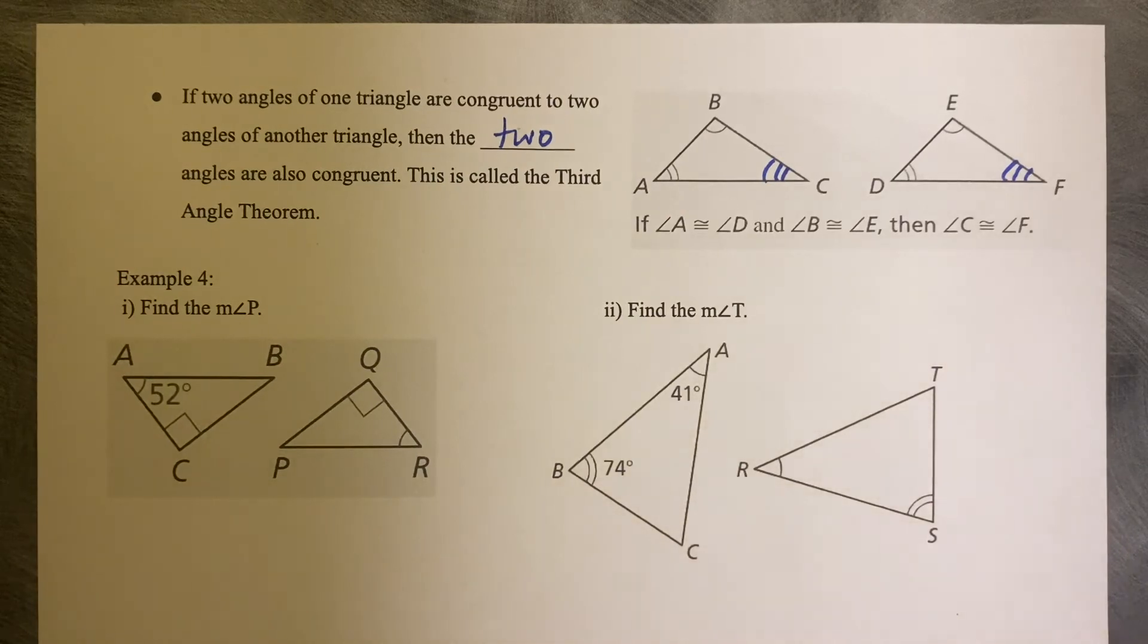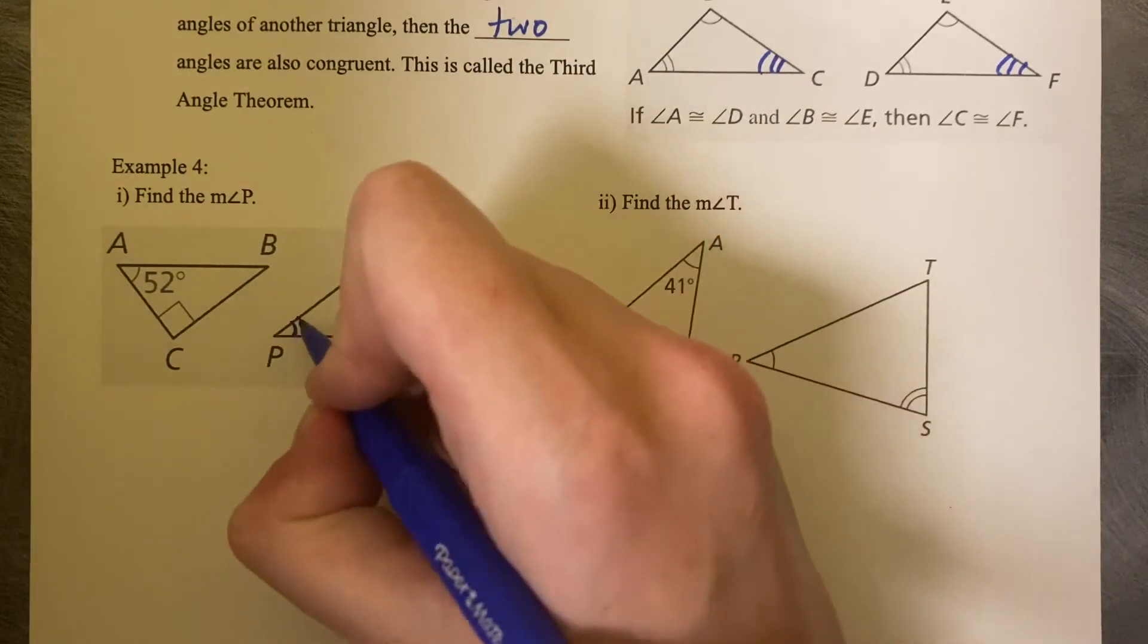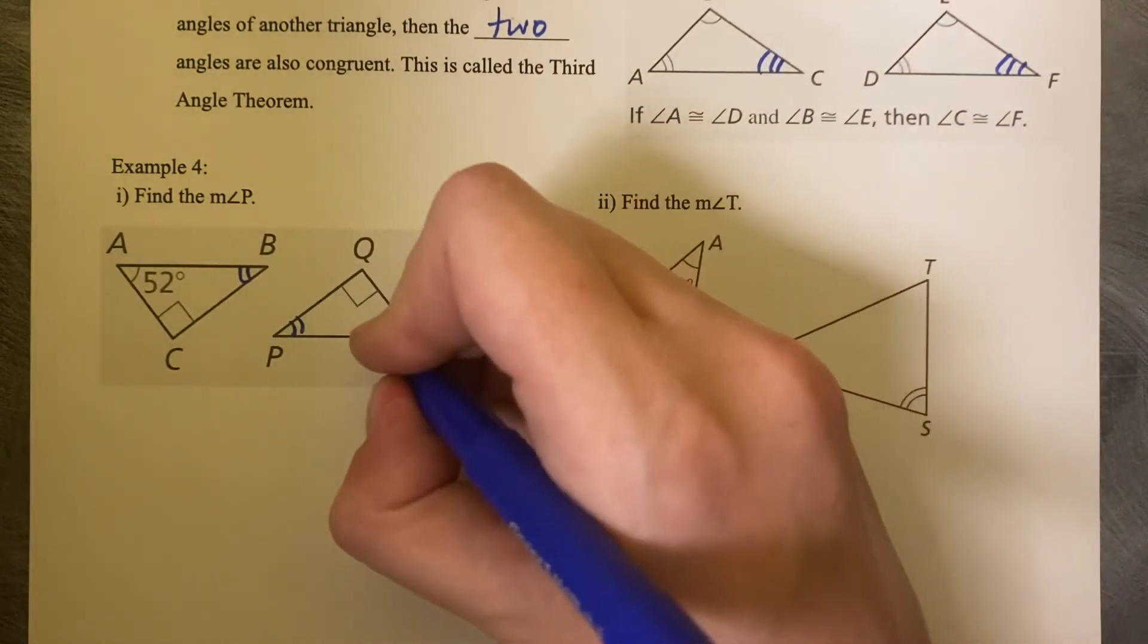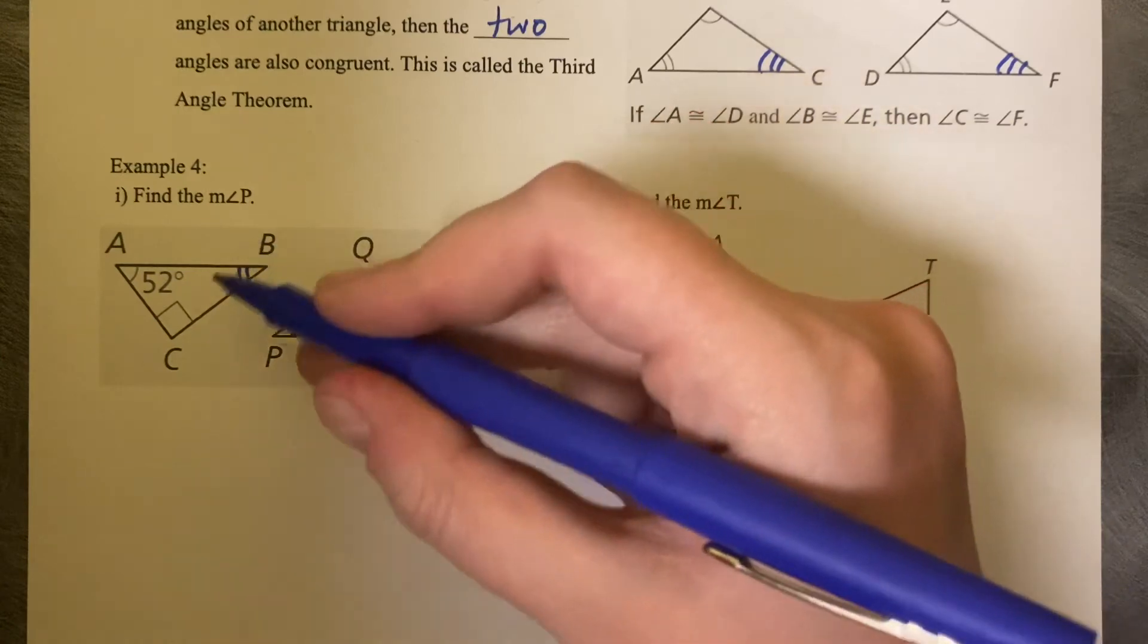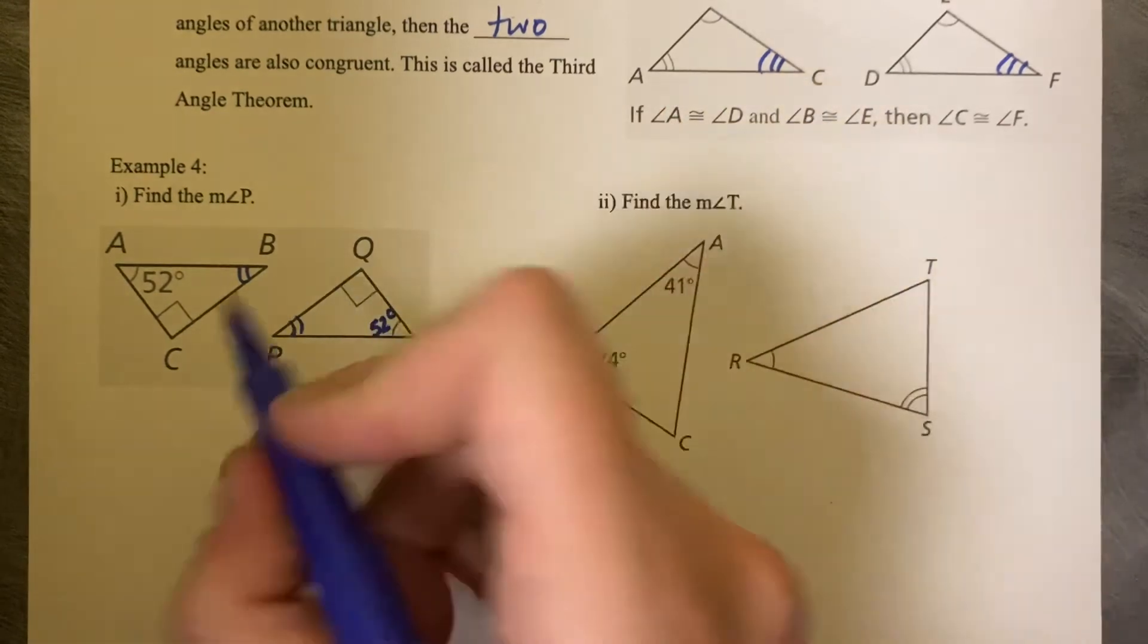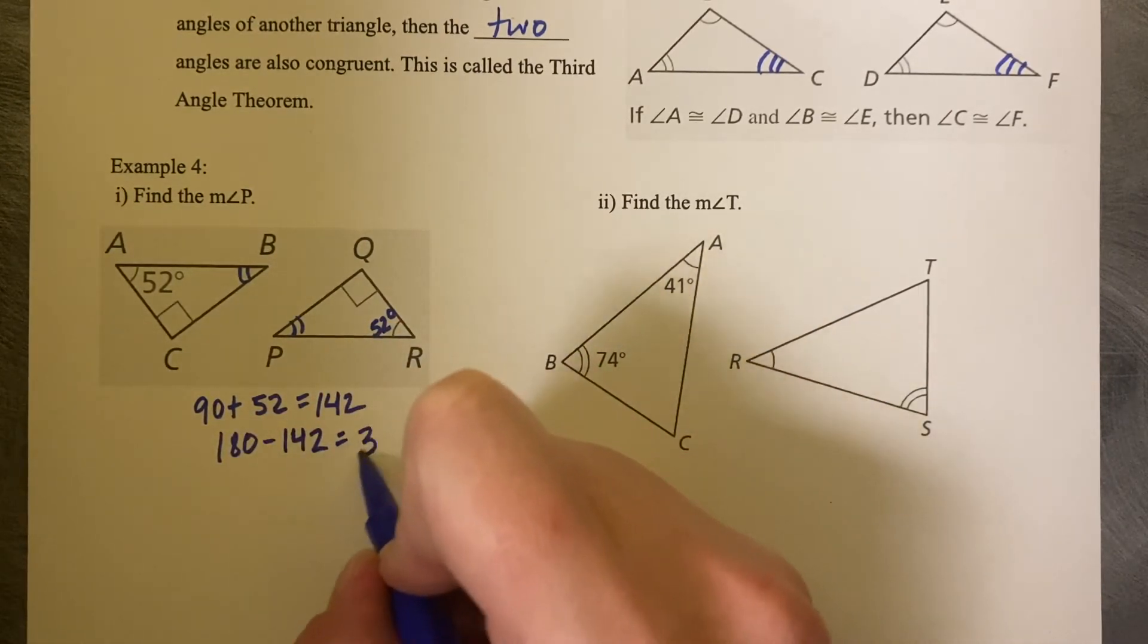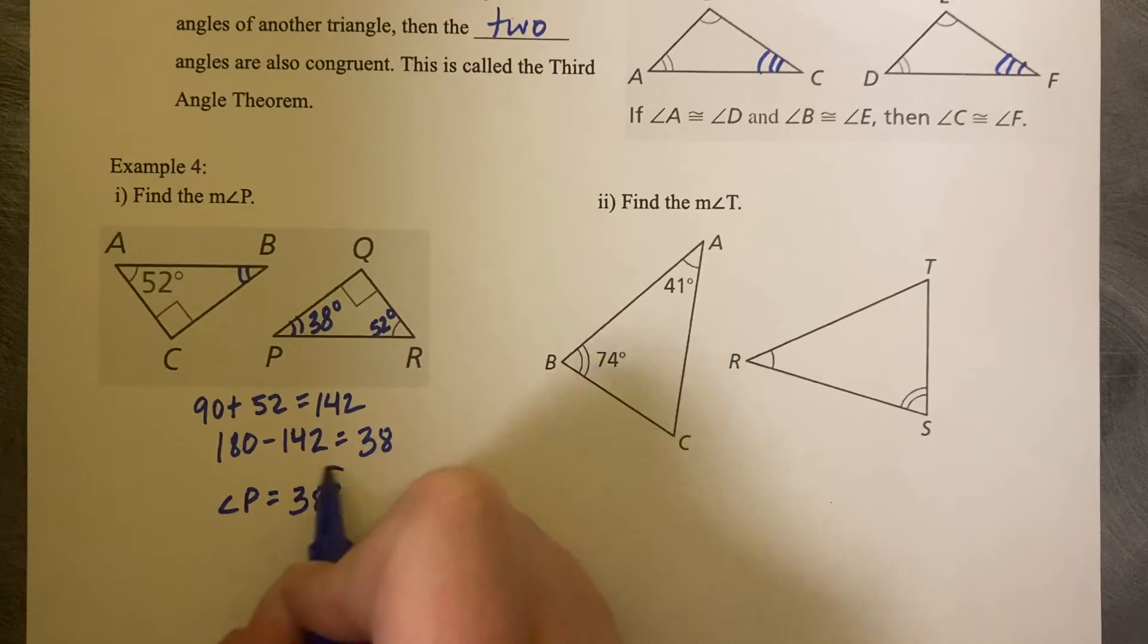So we'll try it here. Find the measure of angle P. Angle P corresponds to angle B. I can also see that this is 52 degrees and that arc mark matches angle R. So that means that angle R is 52 degrees as well and my 90 degree angles match. So I just need to use the third angle theorem or calculate this third angle to find the measure of angle P. So 90 plus 52 is 142 minus 180 is 38. So that means that angle P is 38 degrees.